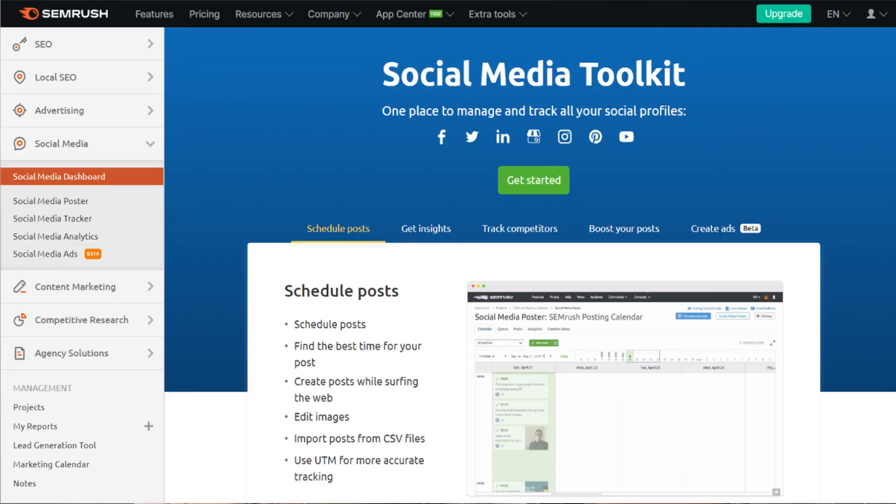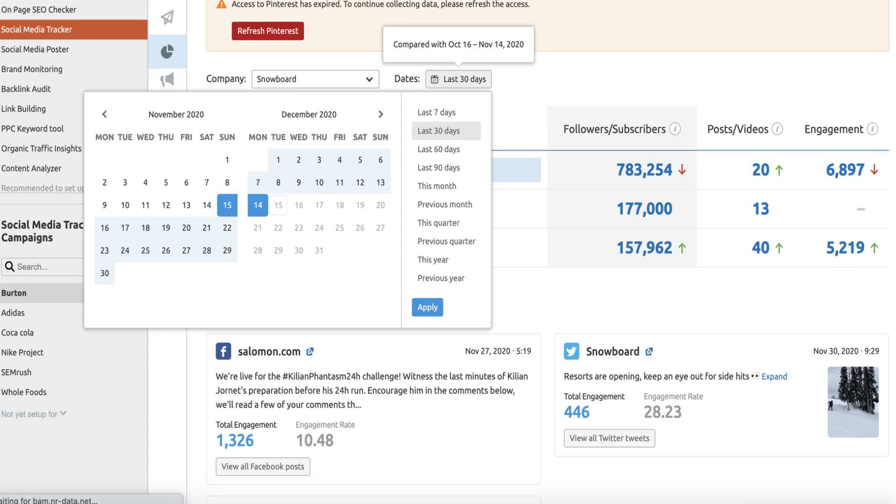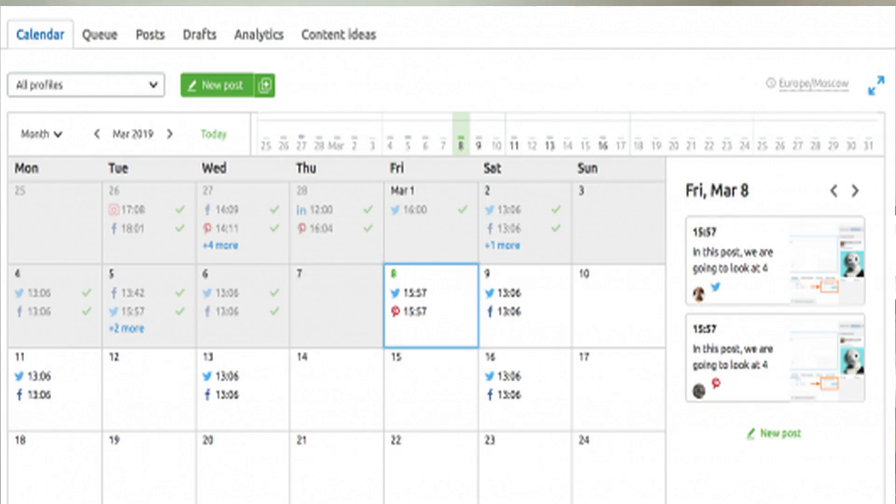Now the fourth tool is SEM Rush's Social Media Tracker and Poster. Just as it sounds, this tool allows you to track 10 social profiles and you can track either your own profiles or your competitors' social accounts. Now they also have the Social Media Poster and as it sounds, this is going to allow you to post directly to multiple social media profiles from a single dashboard.